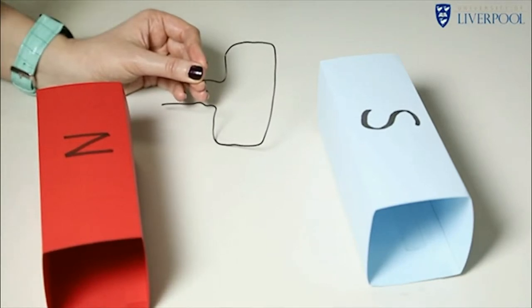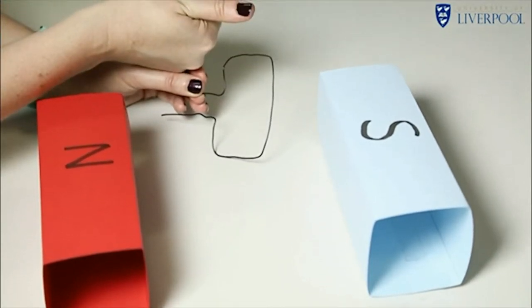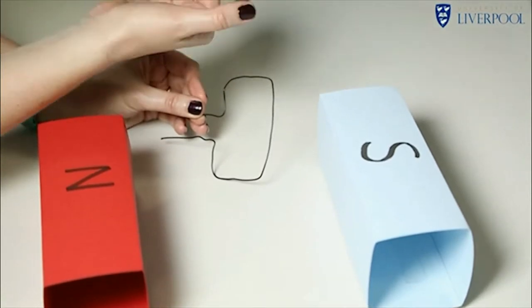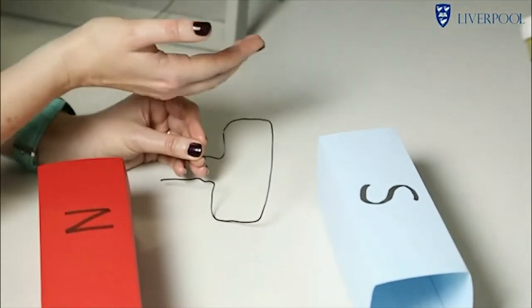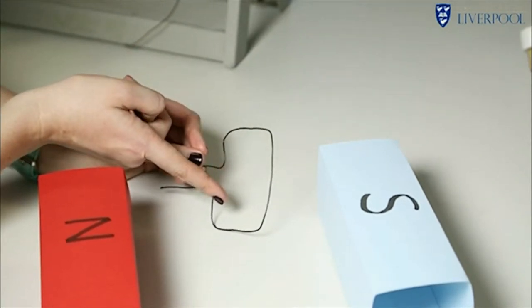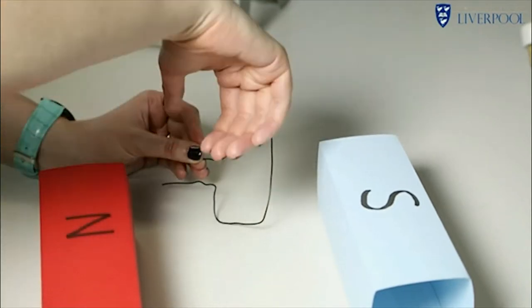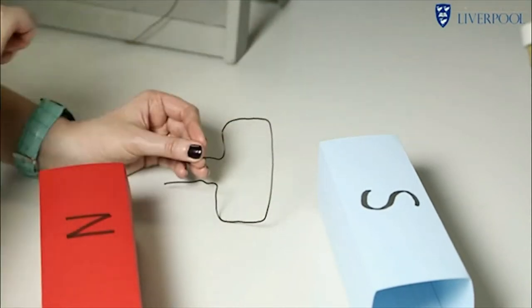Think about the magnetic field that's going to be generated by this wire. So in this part the current is going in this direction, so we'll put our thumb in that direction and we can see that that magnetic field is going to be round in that direction. When we get round to the opposite side, the current is now going downwards in the opposite direction, so this is going to make the magnetic field go in the other direction.